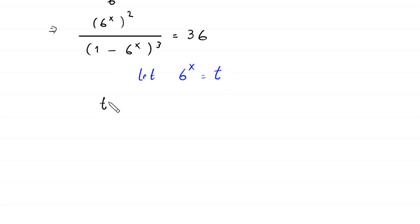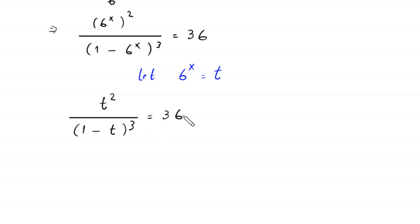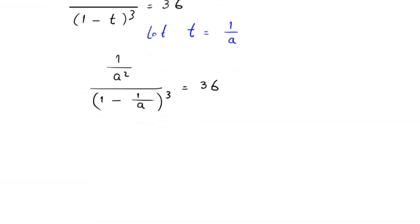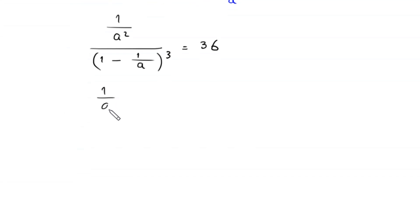Now we suppose that 6 to the power x is equal to t, so the equation becomes t squared divided by (1 minus t) cubed equals 36. Next, we suppose that t equals 1 over a, so this becomes (1 over a) squared divided by (1 minus 1 over a) whole cubed is equal to 36.